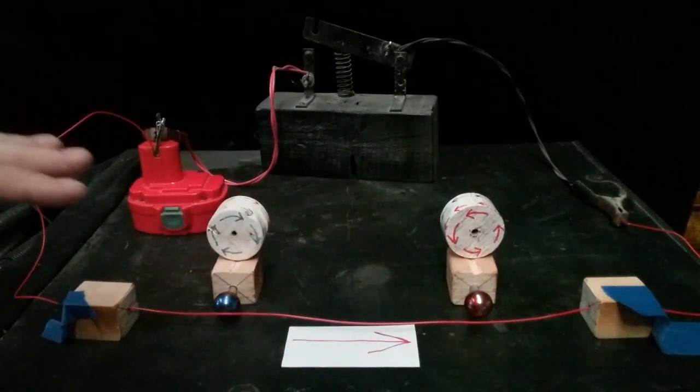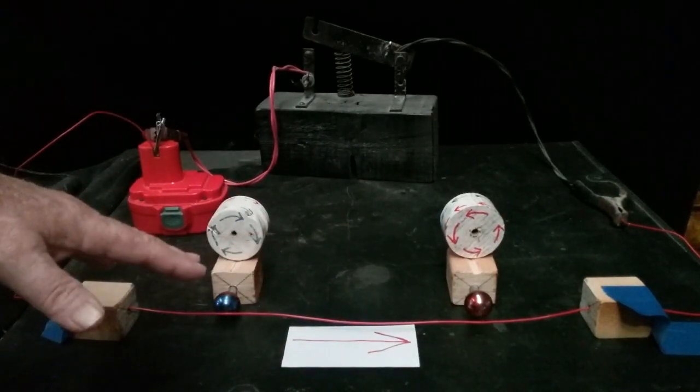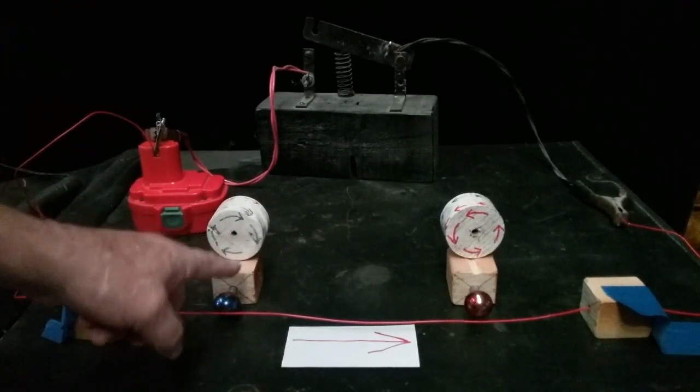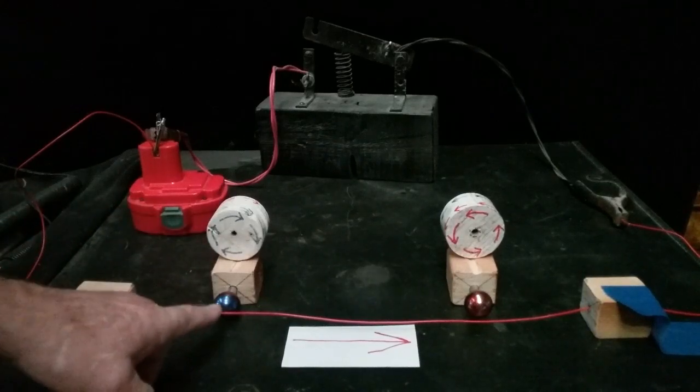Anytime you have a magnet near an electric current, it's going to go to the direction of the rotation of the magnet, the current in the wire. It's going to follow suit on which side of the magnet it goes to.